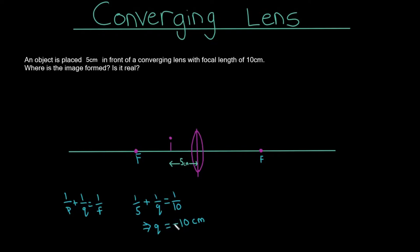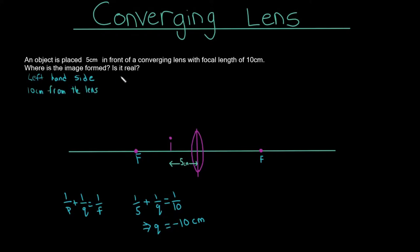Because Q is negative, that means the image is going to form on the left-hand side. It also means the image is virtual — not real. So: where is the image formed? It's formed on the left-hand side, 10 centimeters from the lens. Is it real? No, because it is a negative value, which means it is virtual.